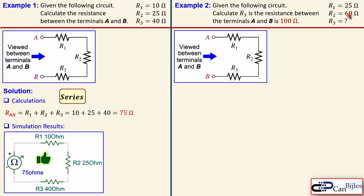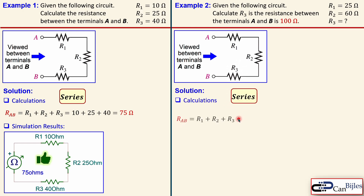Now let's look at example number two — a similar circuit but with only two known resistors. R3 is unknown, but we know the resistance between terminals A and B is 100 ohms. This could be a design problem: given a specific required resistance, calculate the required resistor value R3.